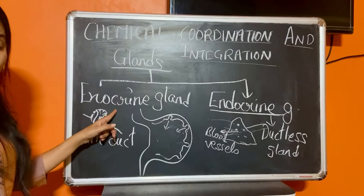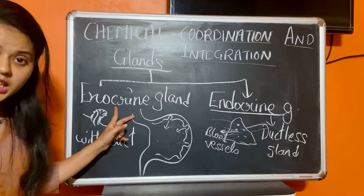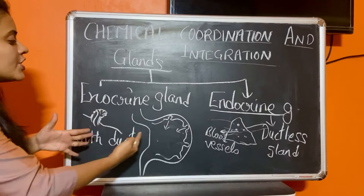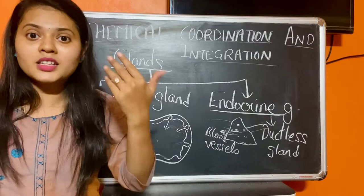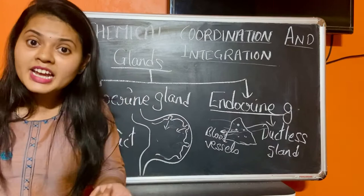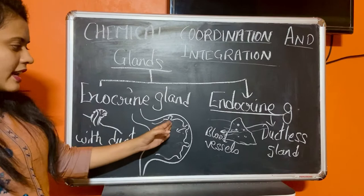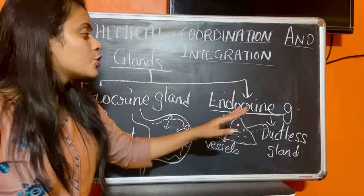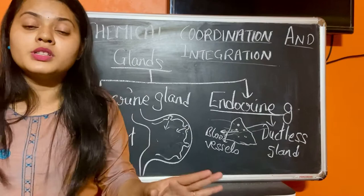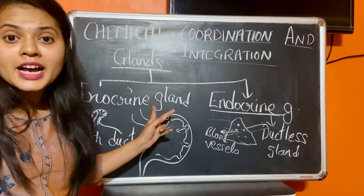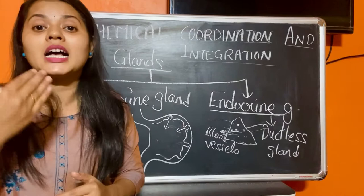Exocrine glands are always with duct; endocrine glands are ductless. Examples of exocrine glands include the sweat gland, which has a duct; the salivary gland, which secretes via a duct; and gastric glands. But in this chapter we are going to talk about endocrine glands, which secrete hormones specifically. Exocrine glands secrete saliva, enzymes, and similar substances, whereas in this chapter we will classify different types of endocrine glands.